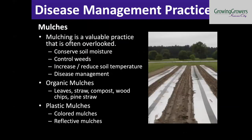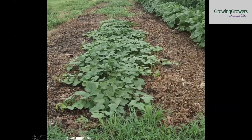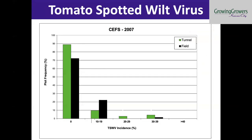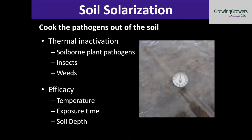We also like to utilize mulching. Anytime you can keep the rain splash from coming up, that can be helpful. Mulching practices are probably more related to weed management than disease management though. Exclusion can be useful, especially in the greenhouse, if you're trying to protect from viruses. We've done some research with that, looking at tomato spotted wilt virus in the high tunnel, because oftentimes the thrips that infect the plants don't cause as much disease when exclusion is used.